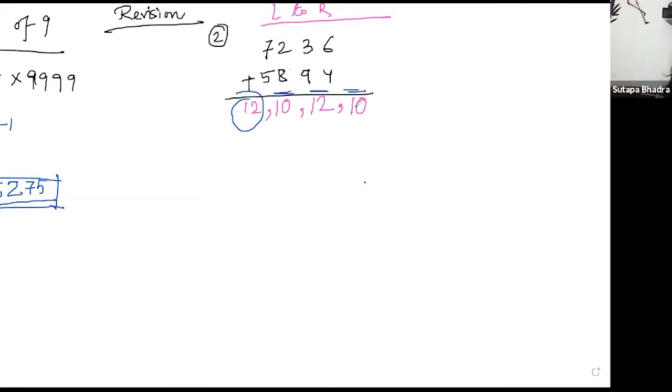So what I'll do: whenever in Vedic math, whatever process you are doing—multiplication, addition, division—if in that particular place you can keep only one digit but you're getting a double-digit number, you will keep the ones digit in the answer and the tens digit will be carried over to the next left number. From the beginning, from multiplication by 11, we are doing the same thing.